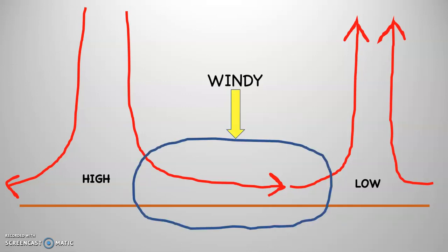If you happen to find yourself between those two pressure systems, as the air flows from high to low, you would be experiencing wind. If you're right below the high pressure, you're probably not going to experience wind, because the air is moving vertically, not horizontally. And if you were right below the low pressure system, you may not be experiencing wind there either, because the air is moving vertically, not horizontally.